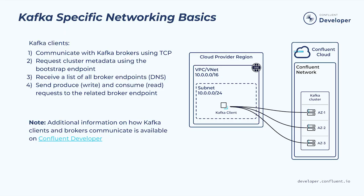Now that we have covered some basic networking concepts as they apply to Confluent Cloud, let's look at a couple of Kafka concepts important from a Confluent Cloud perspective. When designing a network architecture for Kafka, there are a few things to be aware of. Kafka uses a binary protocol over TCP — it doesn't use HTTP or HTTPS. It does support TLS with either a security protocol of SSL, where the Kafka protocol is directly encrypted with TLS and also supports MTLS, or a security protocol of SASL_SSL, which supports both authentication and encryption.